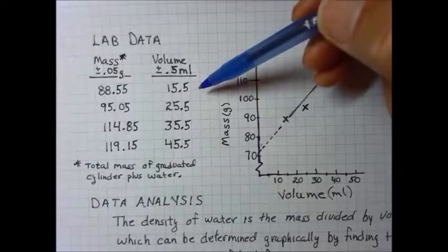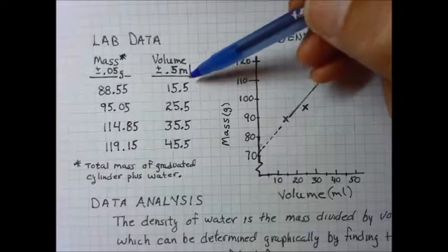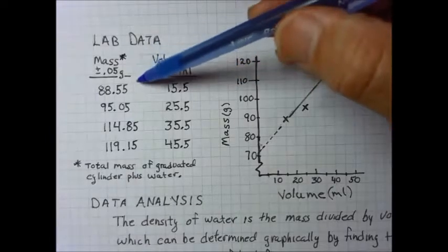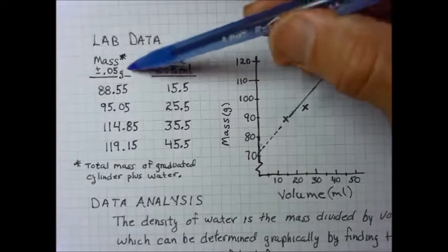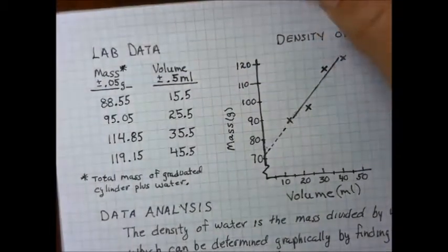Recall that the graduated cylinder that you use may be different. And you may be using a different scale. You may be using a quad beam balance, and your precision were different. It's up to you, the experimenter, to record those correctly.